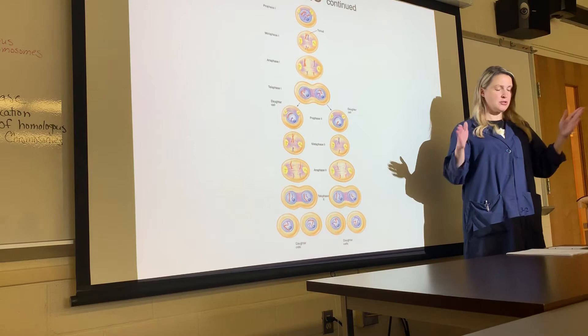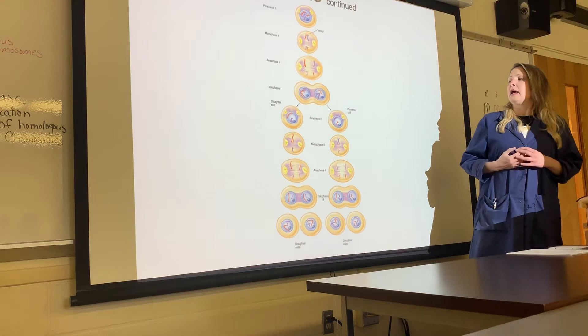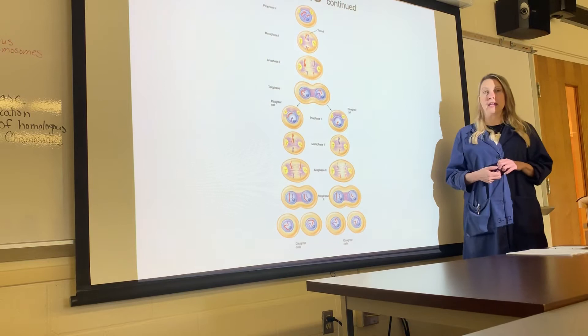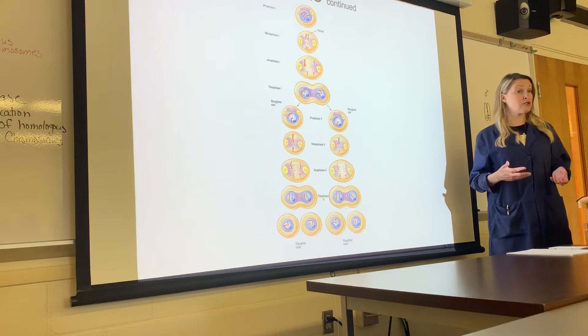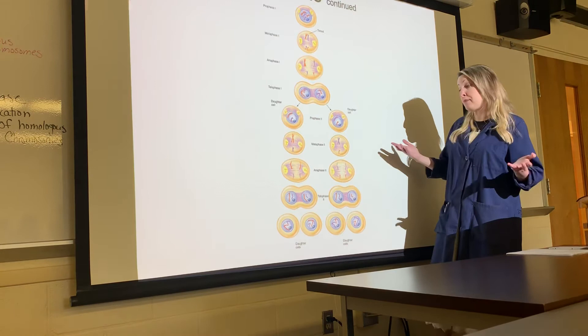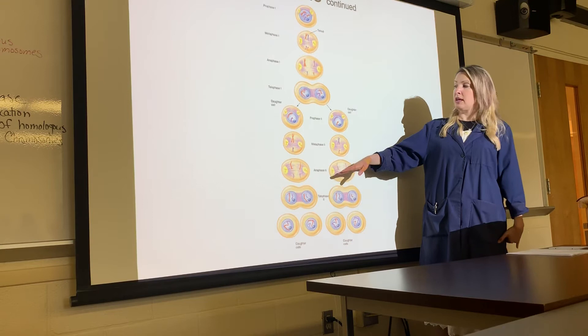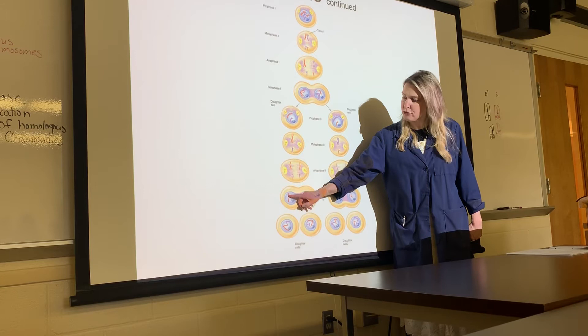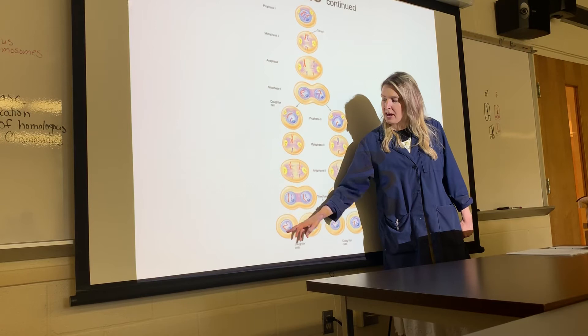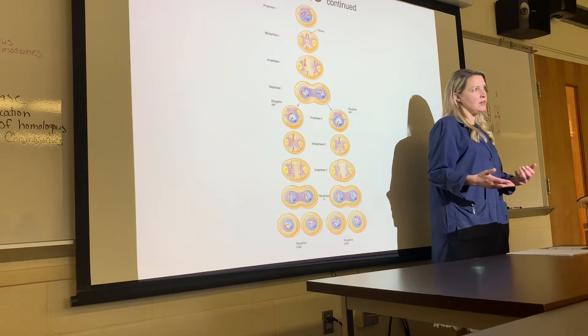Sometimes errors occur — you can have a trisomy or a monosomy. In anaphase 2, instead of chromatid pairs being pulled apart, they may stay together, so one cell gets two copies of a chromosome. For example, if a sperm cell has two copies of chromosome 21 and combines with an egg cell that has one, the resulting child has three chromosome 21s — that's trisomy 21. Many trisomies result in the fetus being naturally aborted because they're not functional, but trisomy 21 can result in a live birth.